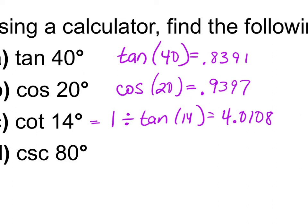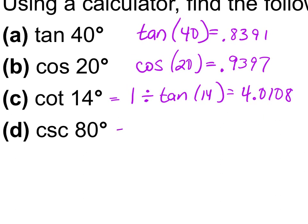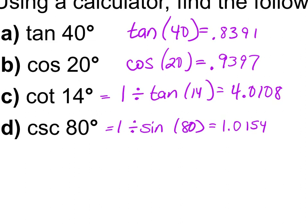What about cosecant? Cosecant goes with sine. So I'm going to hit 1 divided by sine of 80, and I get 1.0154. We just need to make sure we understand how to do this in our calculators.